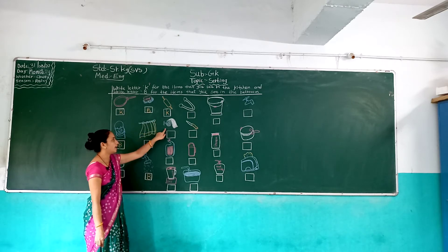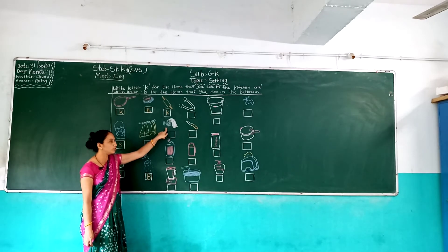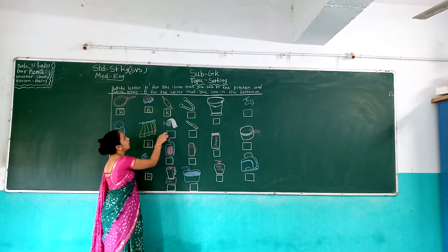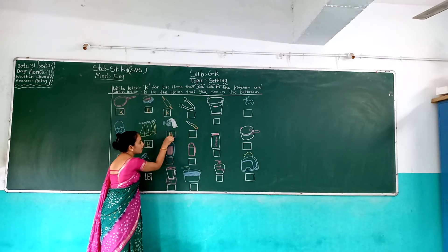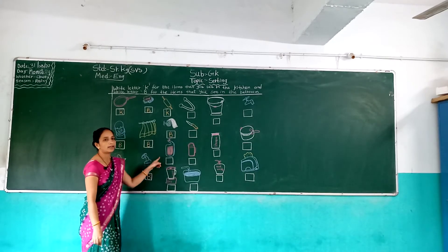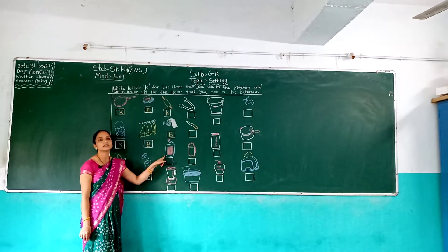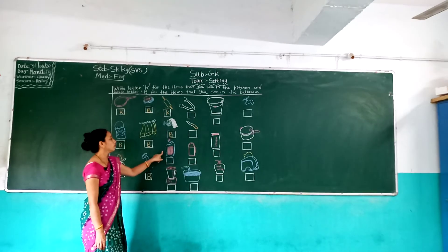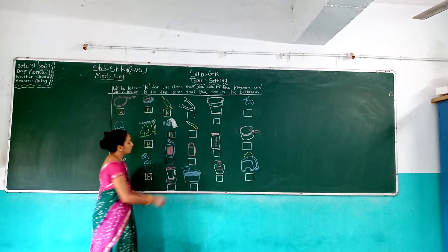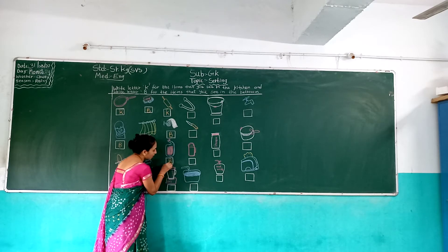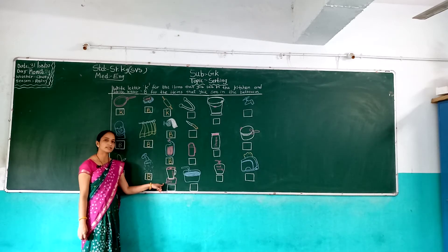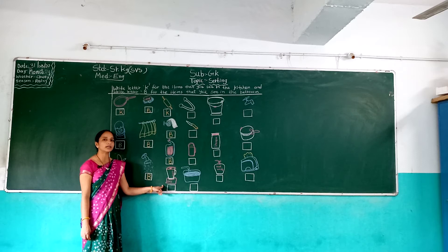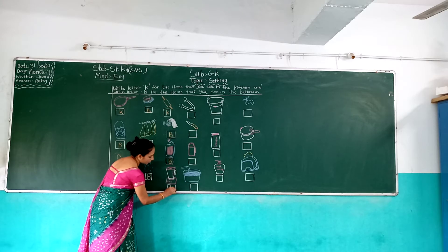And next, tissue paper. Which picture is this? Tissue paper — tissue paper बाथरूम में होता है, यह bathroom item है इसलिए हम यहाँ B letter use करेंगे. So right here B. And next, toilet cleaner. Which picture is this? Toilet cleaner — toilet cleaner हम कहाँ use करते हैं? Bathroom में — तो यह bathroom item हुई, sorting करके हमें यहाँ B write करना है. B letter right करना है.